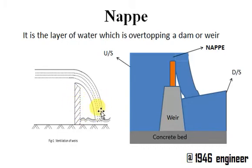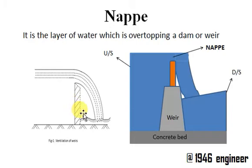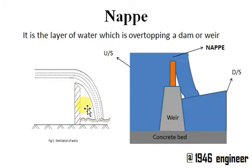Here you can note that some air is entrapped in between the weir wall and the flow of water. This entrapped air is creating a negative pressure, and this negative pressure is attracting the flow more towards the weir wall. This process is increasing the discharge from the upstream side to the downstream side.